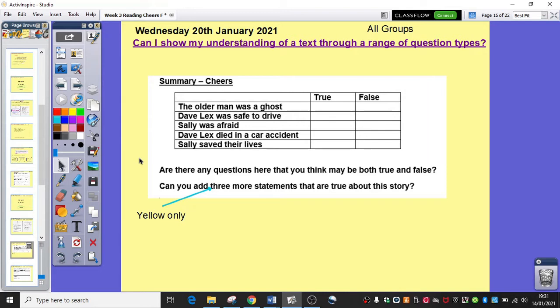So in terms of summary today, you have true and false and everybody is going to be doing this activity. All I want you to do is look at these five statements and simply decide if you think they're true or false: the older man was a ghost, Dave Lex was safe to drive, Sally was afraid, Dave Lex died in a car accident, Sally saved their lives.